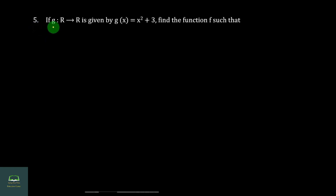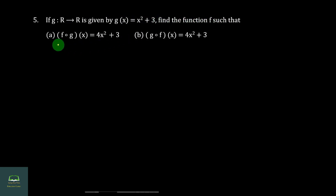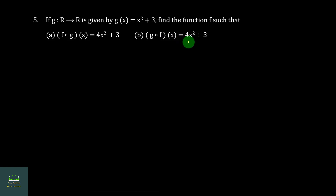Q5. If G's function from R to R is given by G(s) = A² + 3, find the function F such that F∘G(s) is equal to 4A² + 3.